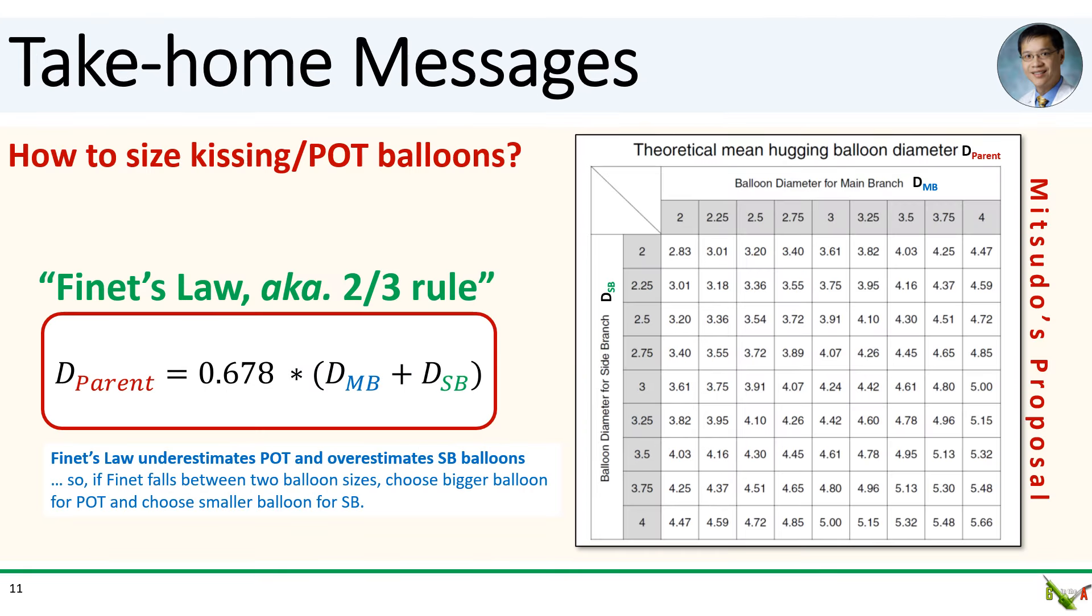All right, take-home messages. We went over two systematic ways of sizing kissing balloons and POT balloons, Finet's law and Mitsudo's proposal. We also talked about Murray's law, but it's not really used clinically. Finet's law, also known as the two-thirds rule, requires some simple arithmetic and is by far the most commonly used method to size kissing and POT balloons. Mitsudo's proposal is nice in that they give you this nice table that you can just refer to if you post it in your cath lab somewhere. And remember that Finet's law will tend to underestimate the size of the parent vessel a little bit and overestimate the size of the side branch a little. So, if we're choosing a POT balloon, if Finet's law gives you a diameter between two balloon sizes, choose the larger one. And for choosing a side branch balloon, if Finet gives you a diameter between two balloon sizes, choose the smaller one.